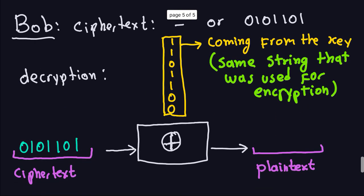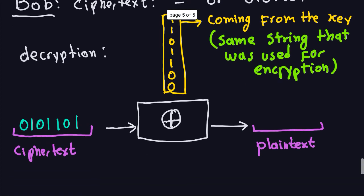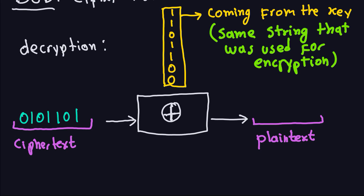So Bob receives the ciphertext, which is the hyphen or minus sign, and its binary representation will be this one right here. The decryption process will go like this: I put this ciphertext binary representation into the XOR, and I feed in exactly the same bits that were used for encryption - these are coming from the key, the same string of zeros and ones that was used for encryption - and we do XOR again.